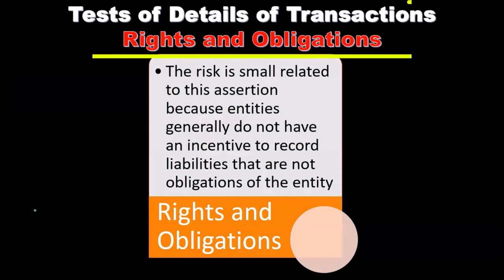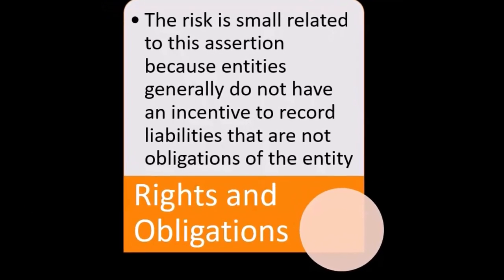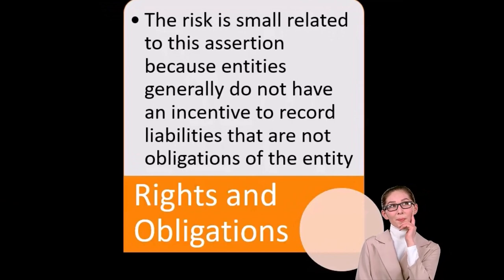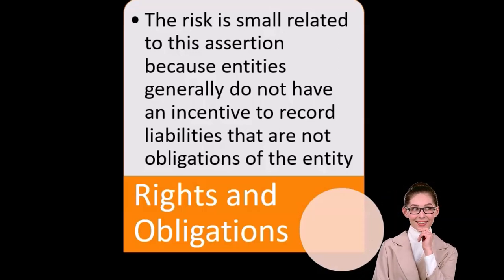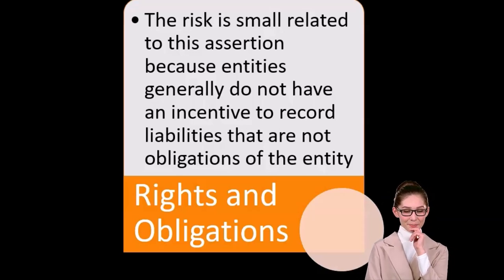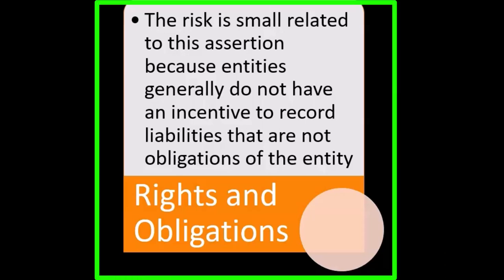For rights and obligations, the risk is small because entities generally do not have an incentive to record liabilities that are not their obligations. Since companies usually wouldn't try to look worse, rights and obligations is not as high a priority assertion for accounts payable.